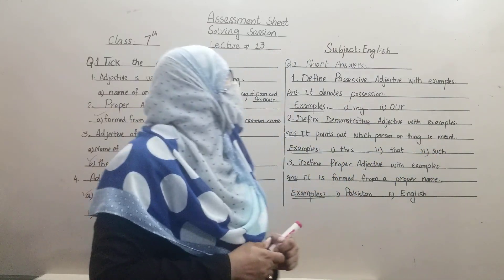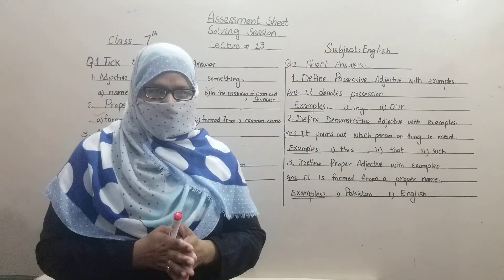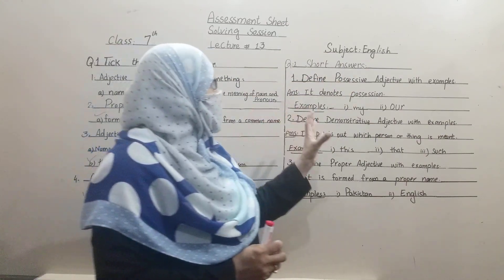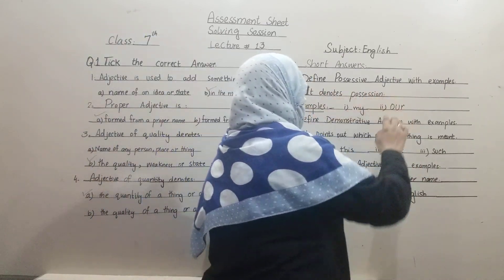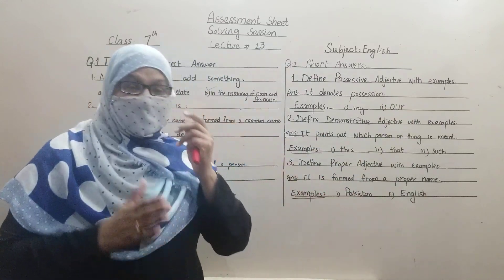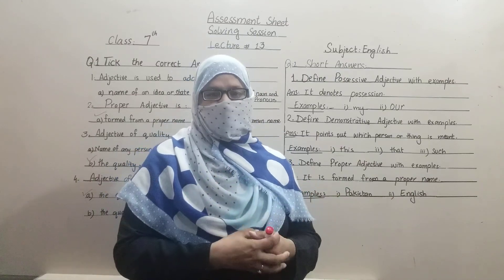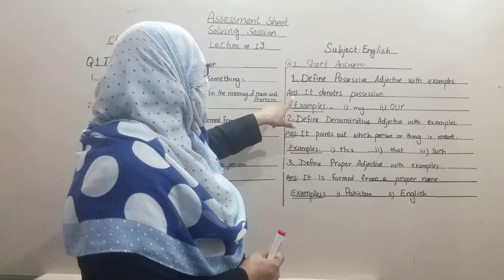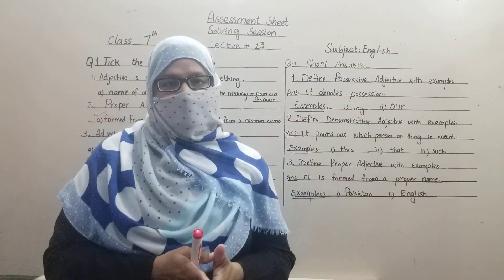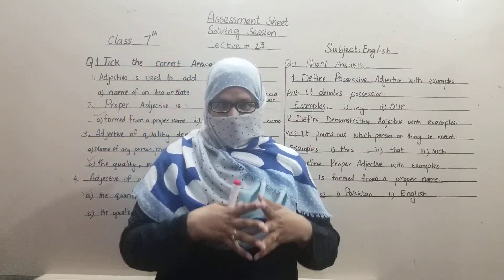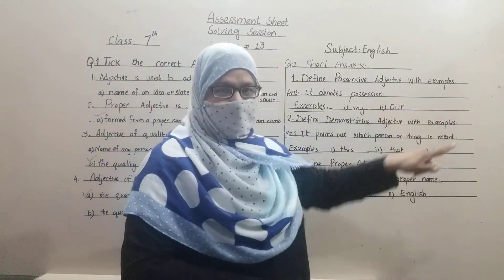Let's see the second question — short answers. Your first question is: define possessive adjective with example. Possessive adjective means the thing we keep in our ownership — what belongs to us. Its definition is: it denotes possession. It indicates ownership — what you own and are the master of. Its example is: mine, our.